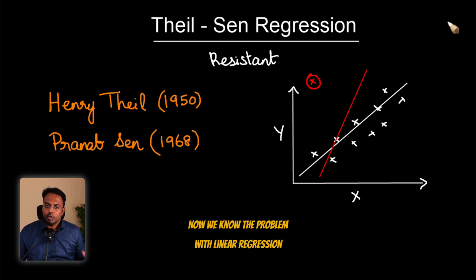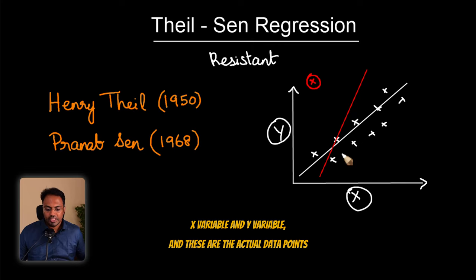Now we know the problem with linear regression. Say you have two variables, x variable and y variable, and these are the actual data points. If you try to draw a line of best fit here, it might come something like this.